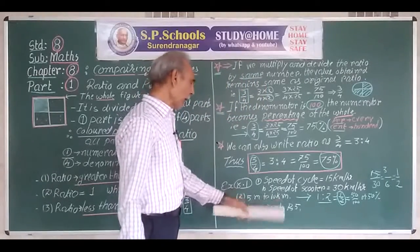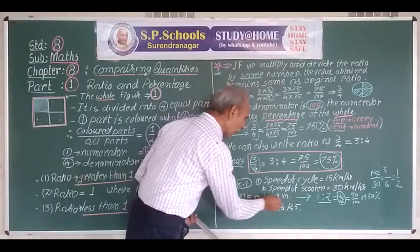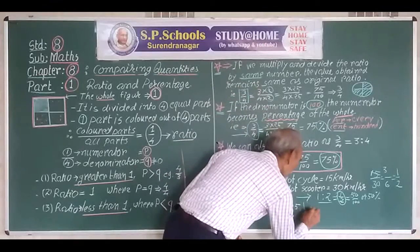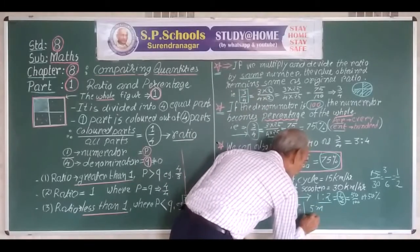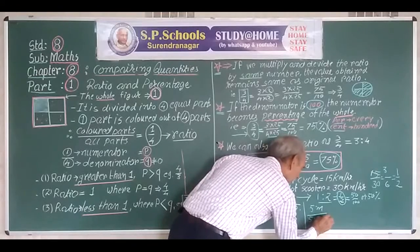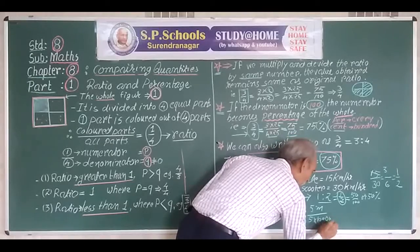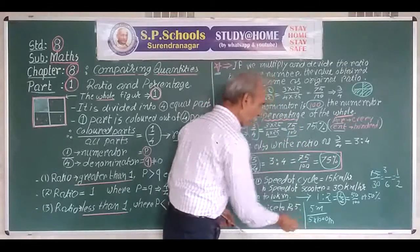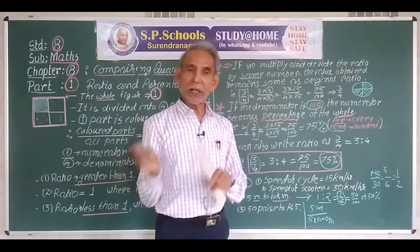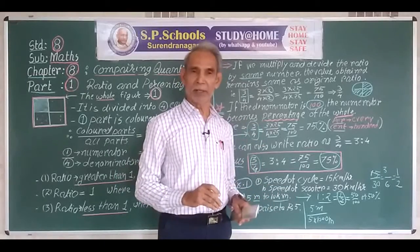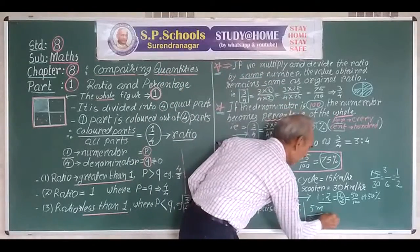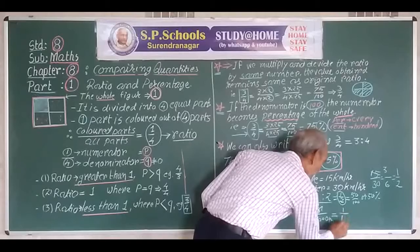Consider 5 meters to 10 kilometers. Here we have meters on one side and kilometers on the other. We must convert them to the same unit. Since 1 kilometer equals 1,000 meters, we convert 10 kilometers to 10,000 meters. Equal quantities can only be compared — we cannot compare meters with kilometers directly. We have to convert, and then only we can compare. This gives us 5 upon 10,000, which simplifies to 1 upon 2,000.